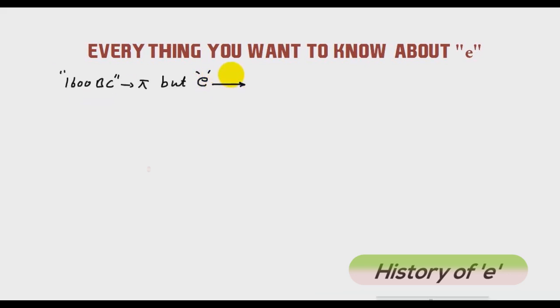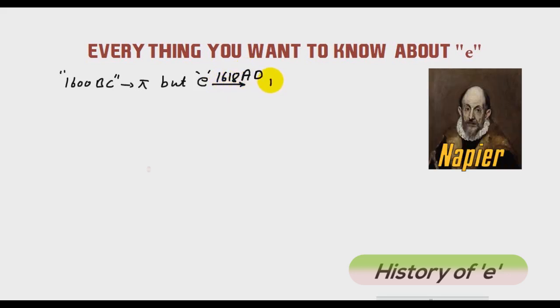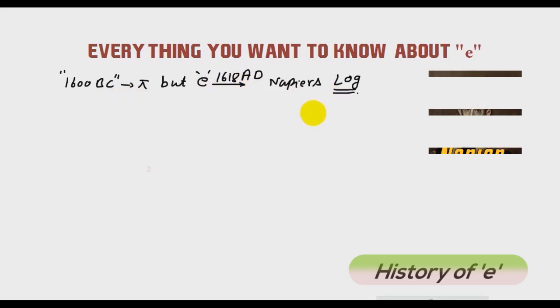The first evidence of e can be seen in 1618 AD in Napier's logarithmic table. Napier is the person who discovered log. But Napier never understood the power of e. At that time, mathematicians used log as a tool to increase their calculation speed. Log m multiply n is equal to log m plus log n. So they were just converting multiplication to addition and division to subtraction and like that only.